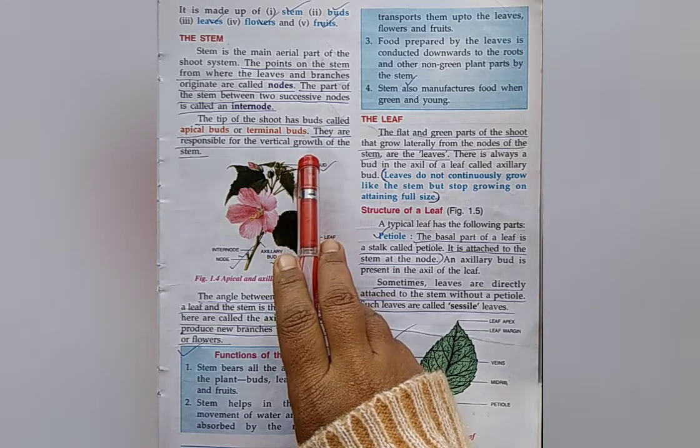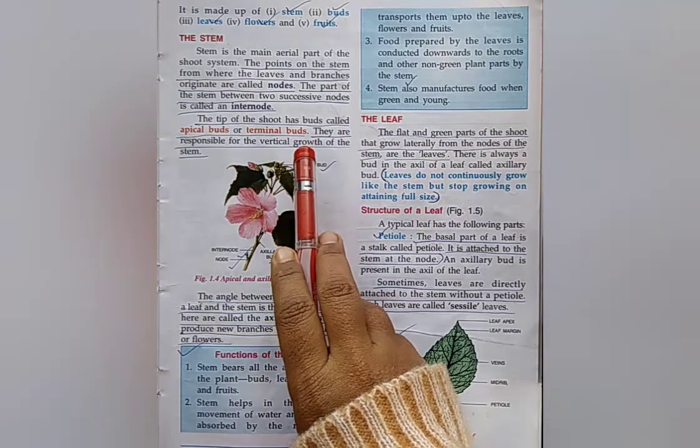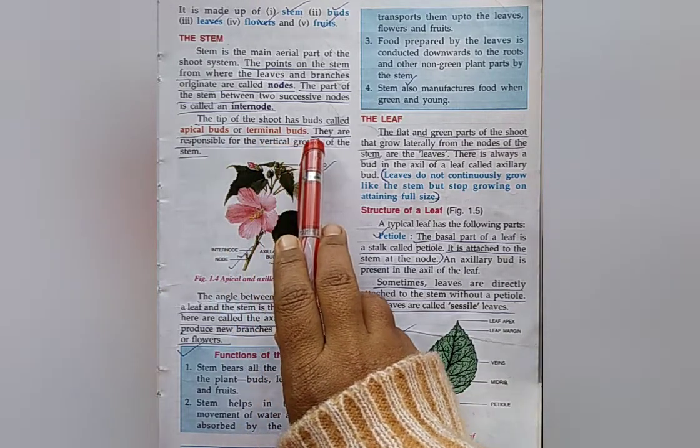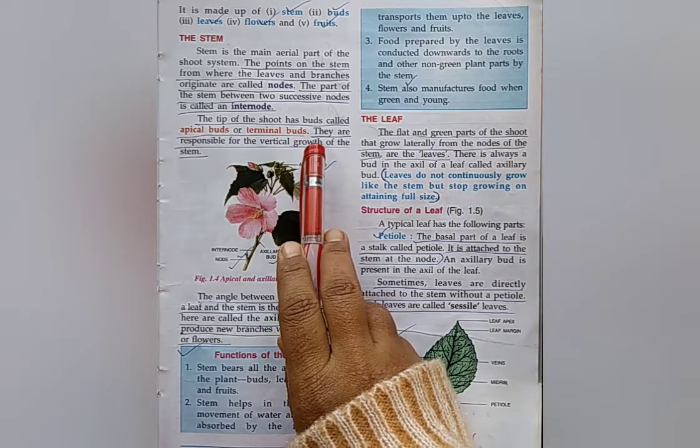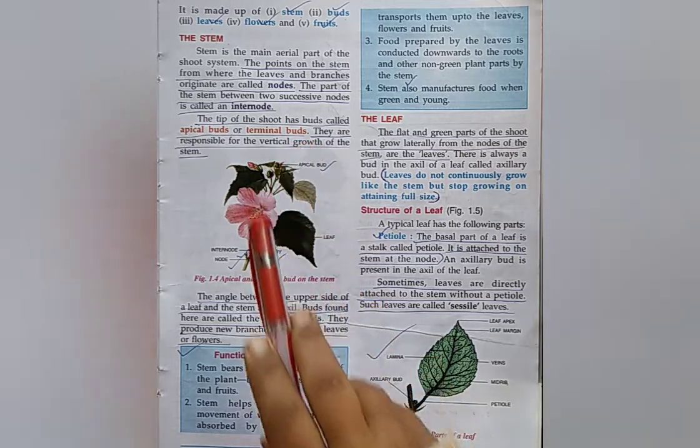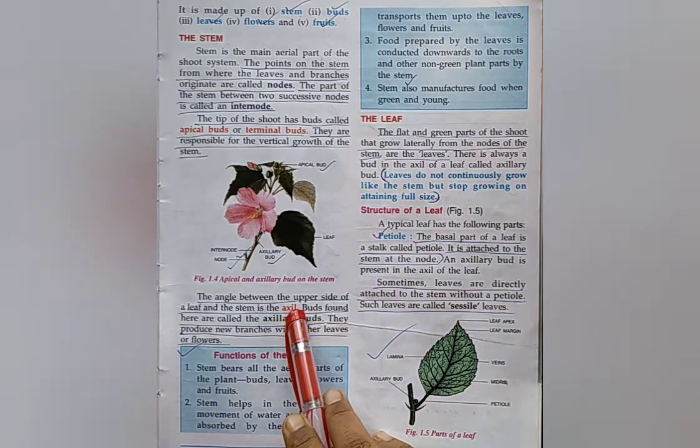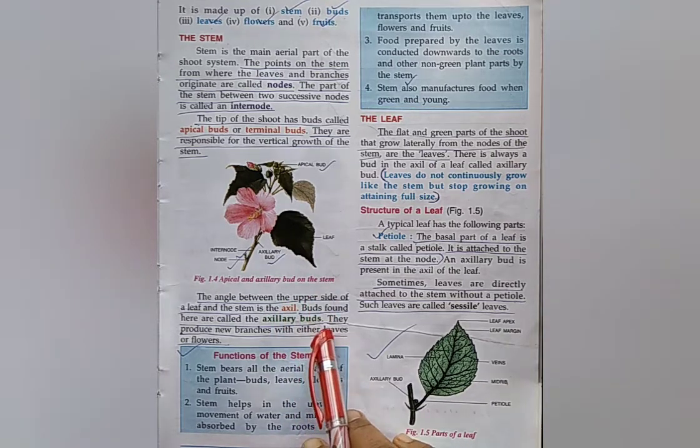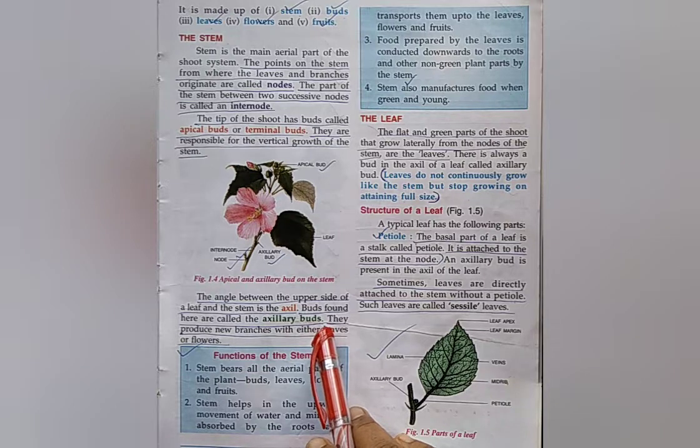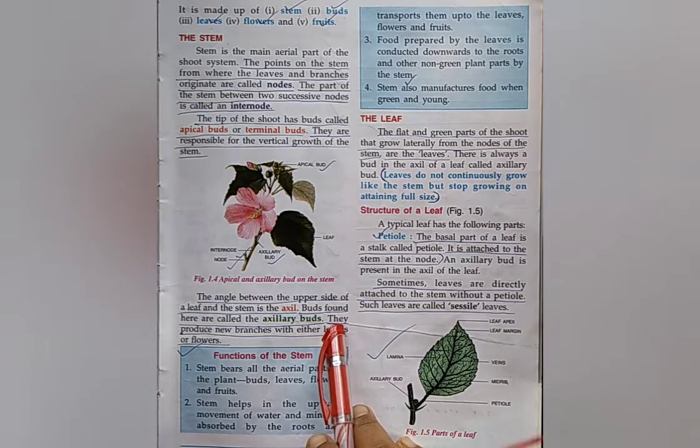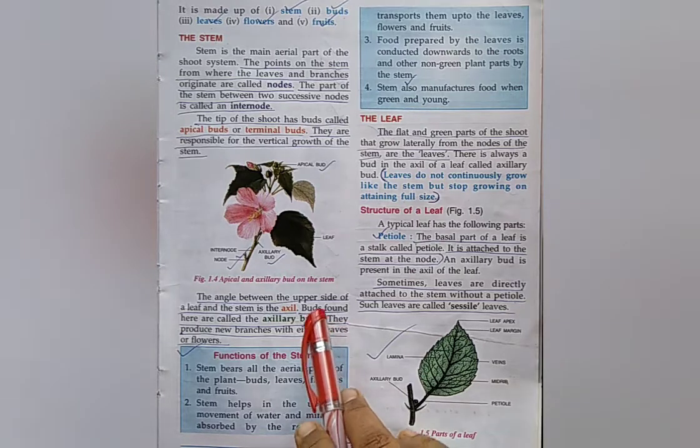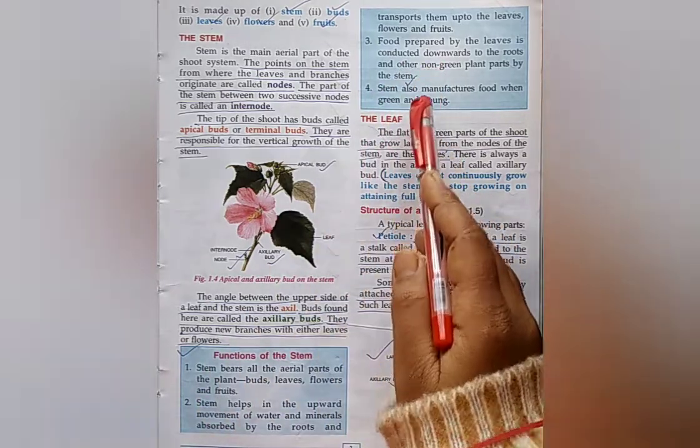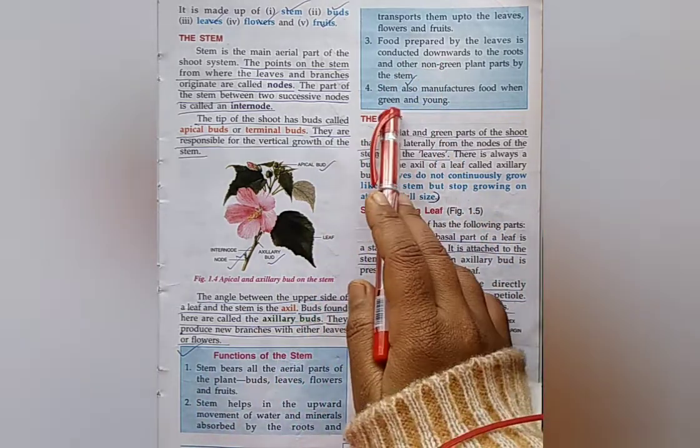What is internode? The part of the stem between two successive nodes is called an internode. Which are called apical buds or terminal buds? These buds are found on the tip of shoot. They are responsible for the vertical growth of the stem. What is axil? Answer: The angle between the upper side of a leaf and the stem is the axil. Which are called axillary buds? The buds which are found in axil are called axillary buds. They produce new branches with either leaves or flower. Next question: Functions of stem.